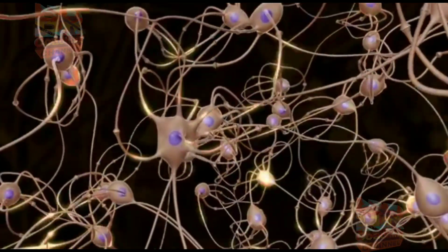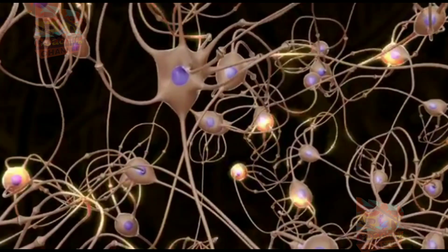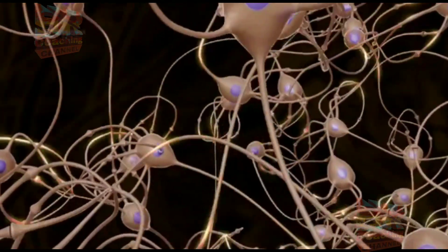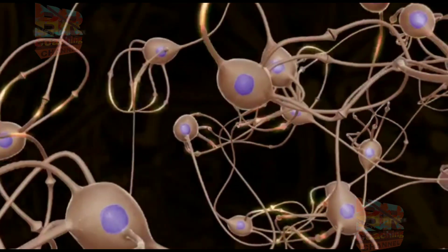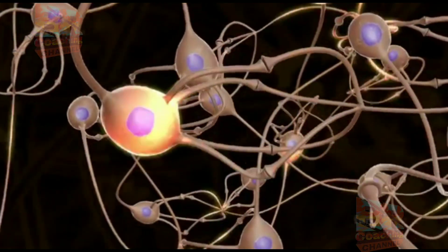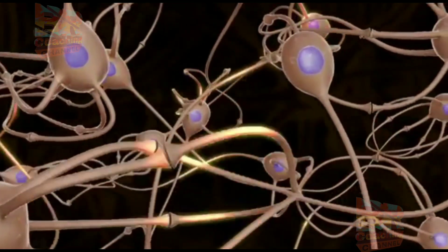The nervous system is composed of billions of cells known as neurons. These tiny cells carry the messages of the body in the form of electrical signals known as impulses.